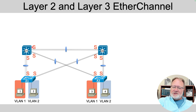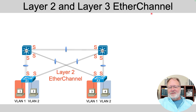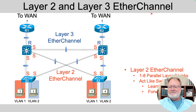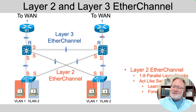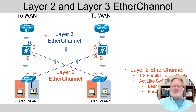If the ports are switched ports, it's a layer two EtherChannel. We can also put multiple links between multi-layer switches and routers at the top of the design, combine those into an EtherChannel, and if we make those ports on the switches be routed ports, it becomes a layer three concept — we call those layer three EtherChannels. Both terms are called out in the CCNA exam topics.